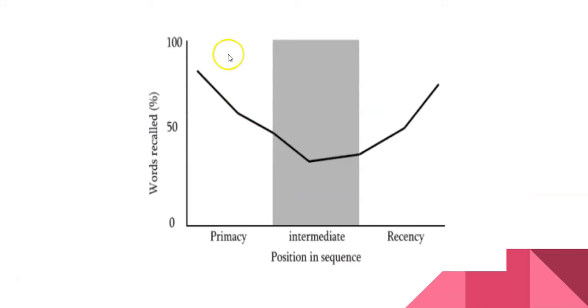So here's a little bit of a graph you can see here. The words at the beginning of the list are most remembered. Then there's a dip at the middle. And then the words at the end of the list were also remembered quite well.